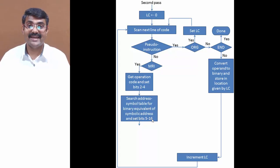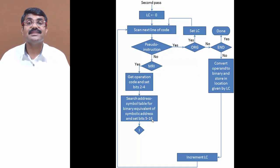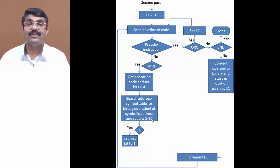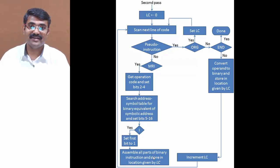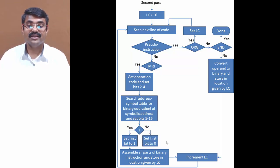The remaining part is determining whether the instruction is direct or indirect, based on the 'I' flag. If 'I' is written in the instruction, it is an indirect instruction, so we set bit 1 to one. Then we assemble all parts — bit 1, bits 2 to 4, and bits 5 to 16 — into a single 16-bit form and store it at the location counter, then increment LC and scan the next line. If the instruction is direct, bit 1 is set to zero, and we assemble and increment LC similarly.